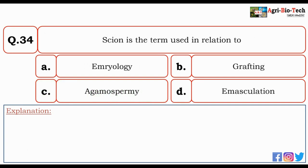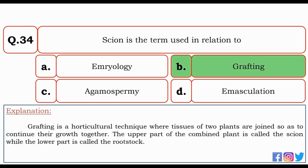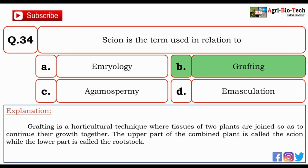Next question: scion is a term used in relation to — embryology, grafting, agamospermy, or emasculation? The correct answer is B — grafting. Grafting is a horticultural technique where tissues of two plants are joined so as to continue their growth together. The upper part of the combined plant is called the scion, while the lower part is called the rootstock.